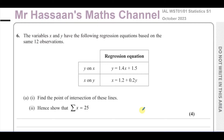Here we have been given variables X and Y, and they have the following regression equations based on the same 12 observations. So you have the regression line of Y on X and you also have the regression line of X on Y. These are given. The regression equation is basically the line of best fit.